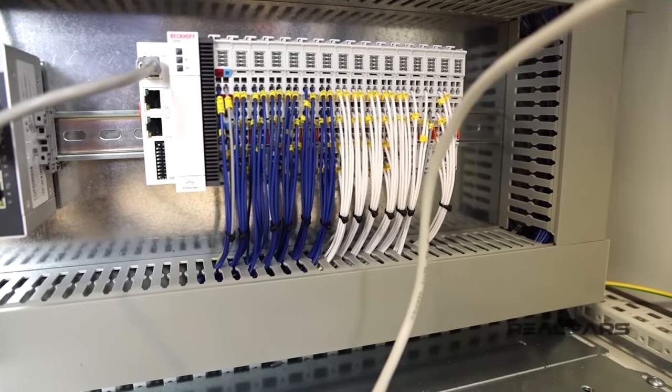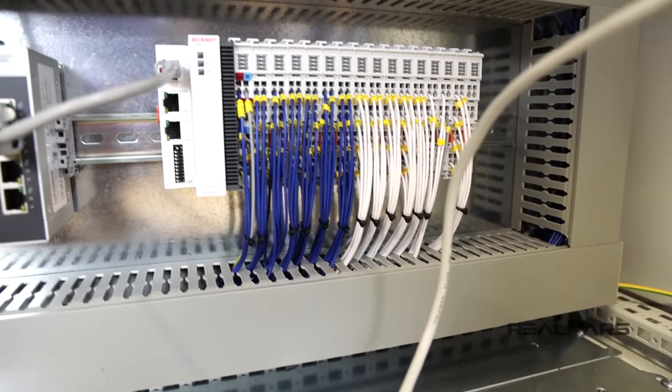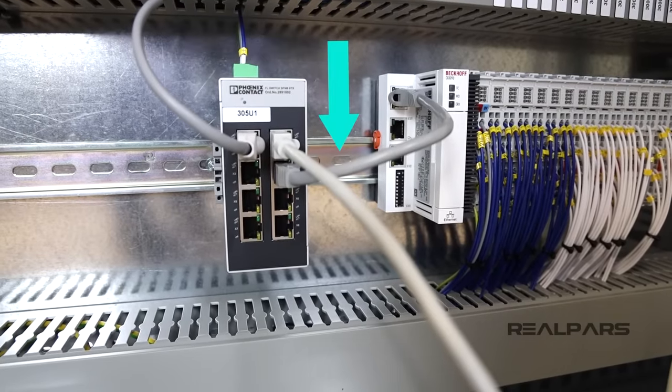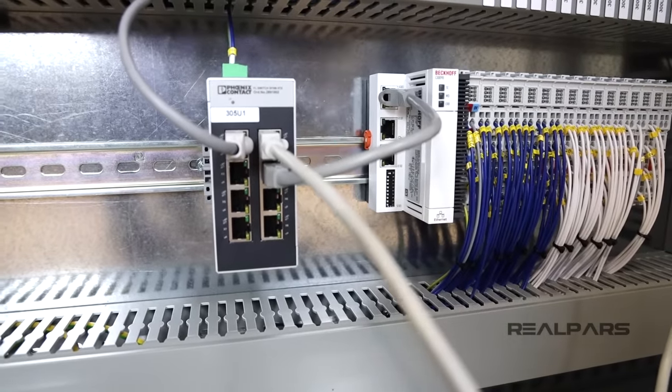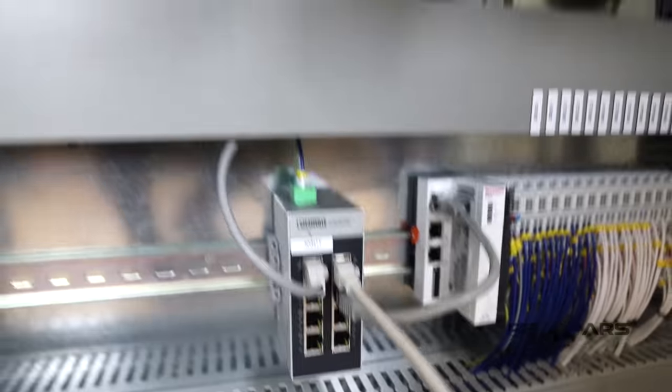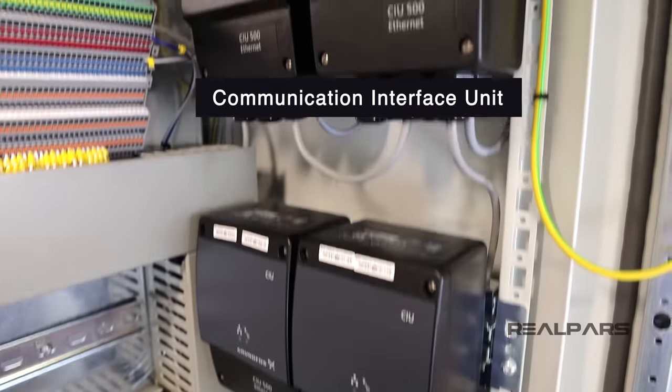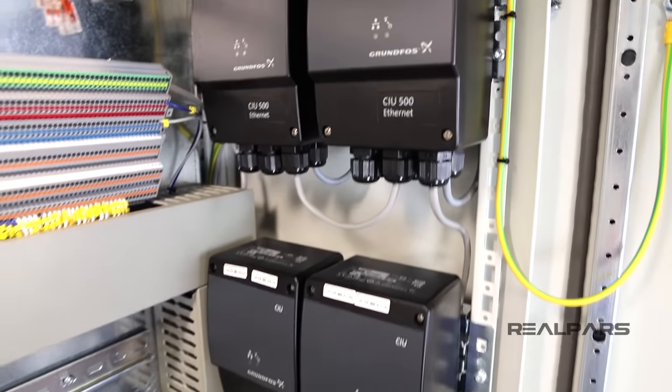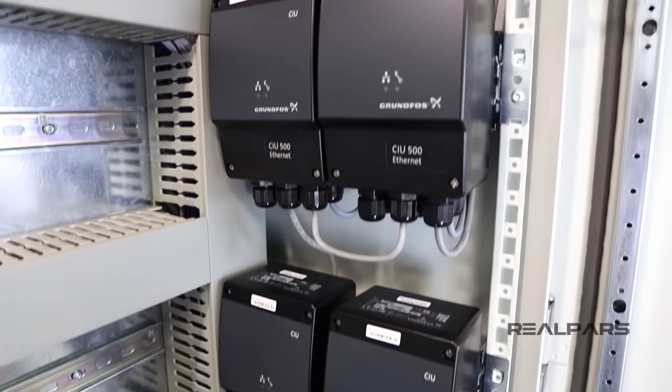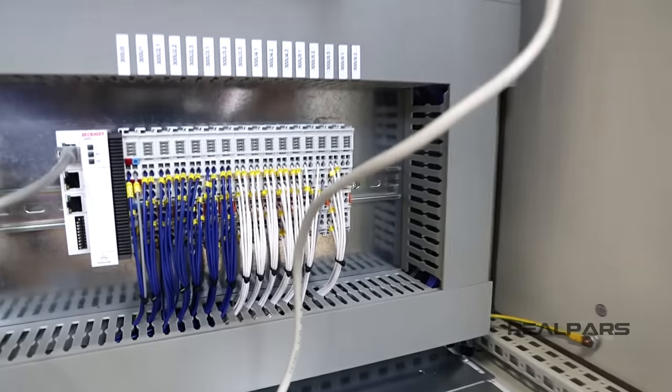Moving on, as you can see, the PLC is connected to an Ethernet switch via these cables. From the other end, the Ethernet switch is connected to these devices, which we call Communication Interface Unit or CIU. These interface units connect to the pumps that are installed in the field, and that's how the PLC can control the pumps.